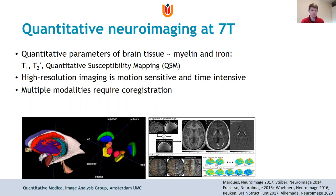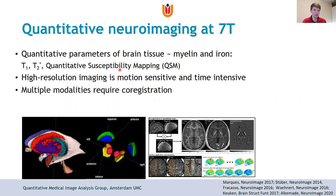We are interested in multimodal imaging to arrive at parameters of brain tissue, where we're focusing on T1, T2*, and quantitative susceptibility mapping (QSM) as markers for myelin and iron in the brain.